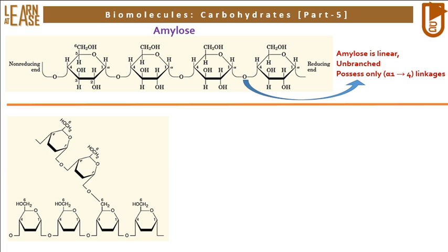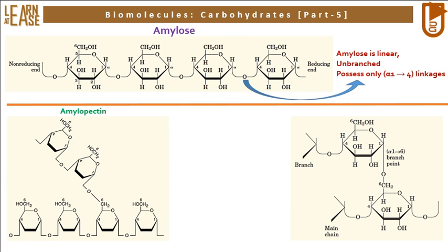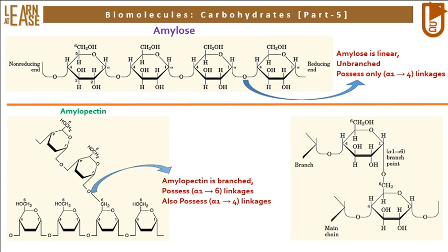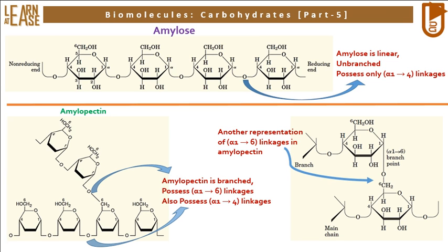The following image represents the structure of amylopectin, where both alpha-1-4 linkages and alpha-1-6 linkages are shown. The image shows that branching in amylopectin occurs by the presence of alpha-1-6 linkages. The image on the bottom right shows another representation of alpha-1-6 linkages in amylopectin.